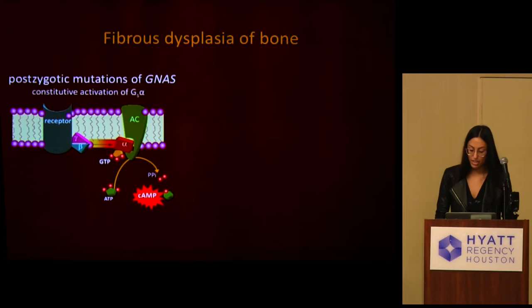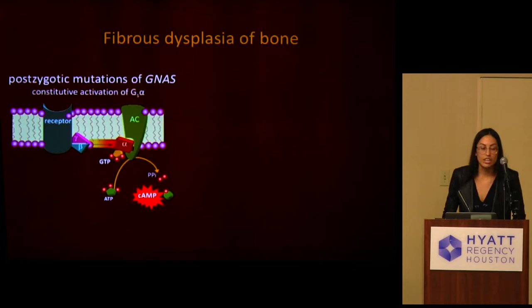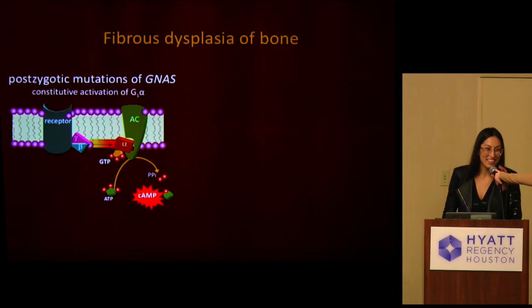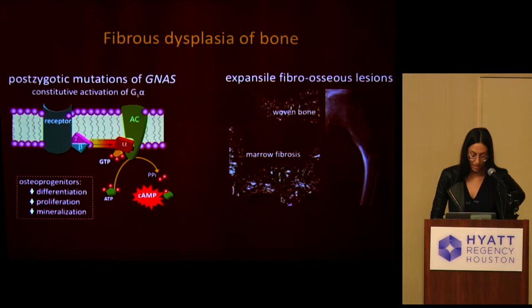Fibrous dysplasia is a rare bone disease that results from post-zygotic mutations in the gene GNAS. GNAS encodes the alpha subunit of the stimulatory G protein. Mutations in GS alpha result in constitutive ligand-independent receptor activation and subsequently inappropriate cyclic AMP-mediated signaling.